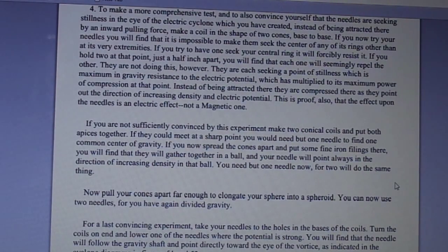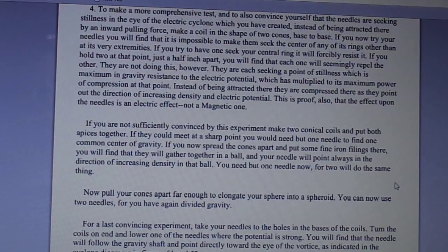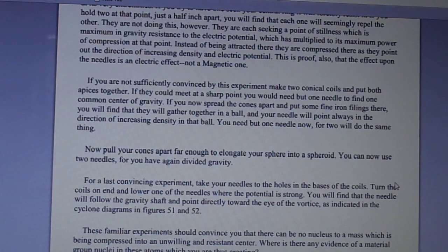If you are not sufficiently convinced by this experiment, make two conical coils and put both apices together. If they could meet at a sharp point, you would need but one needle to find one common center of gravity. If you now spread the cones apart and put some fine iron filings there, you will find that they will gather together in a ball, and your needle will point always in the direction of increasing density in that ball. You need but one needle now, for two will do the same thing. Now pull your cones apart far enough to elongate your sphere into a spheroid. You can now use two needles, for you have again divided gravity.